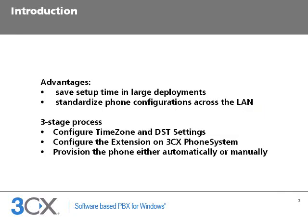Provisioning your phones may help you save setup time even in small deployments. The easiest way to set up a phone for use with 3CX phone system is to use the built-in provisioning functionality. This will allow the phone to configure itself by retrieving a 3CX generated phone configuration file. You can also configure your DHCP server to deliver to the phone the location from where it can retrieve its configuration file, resulting in completely automated phone configuration.